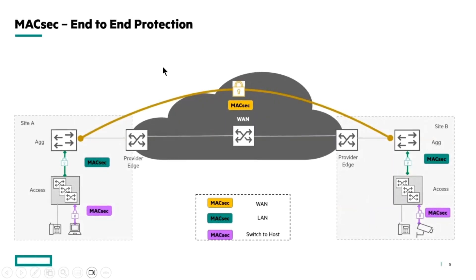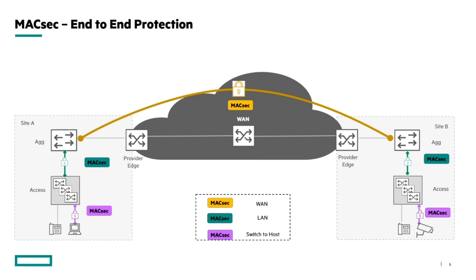The general overview of the MACSEC features that our CX switches support includes switch-to-host MACSEC, LAN-MACSEC between two switches over a point-to-point link, and WAN-MACSEC between two devices connected over an L2 network in geographically distributed locations. We provide WAN-MACSEC, LAN-MACSEC, and switch-to-host MACSEC in our CX switches.